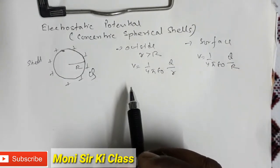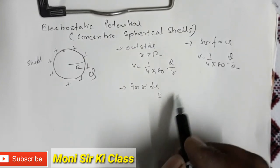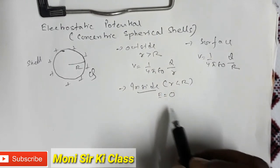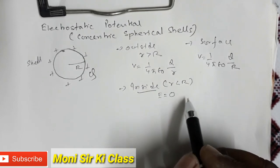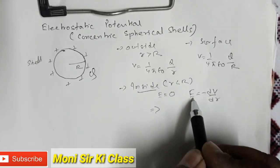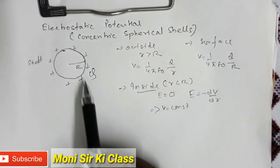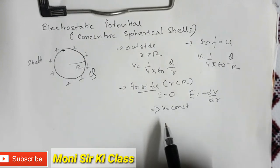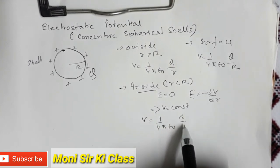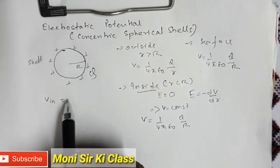Inside the spherical shell there is no charge, so the electric field is zero inside — at a distance r less than R, electric field is zero. Since electric field is the negative gradient of electric potential, if E = 0 then dV/dr = 0, which implies V is constant. That constant value equals the potential on the surface: V = (1/4πε₀)(Q/R). So V_inside = V_surface.